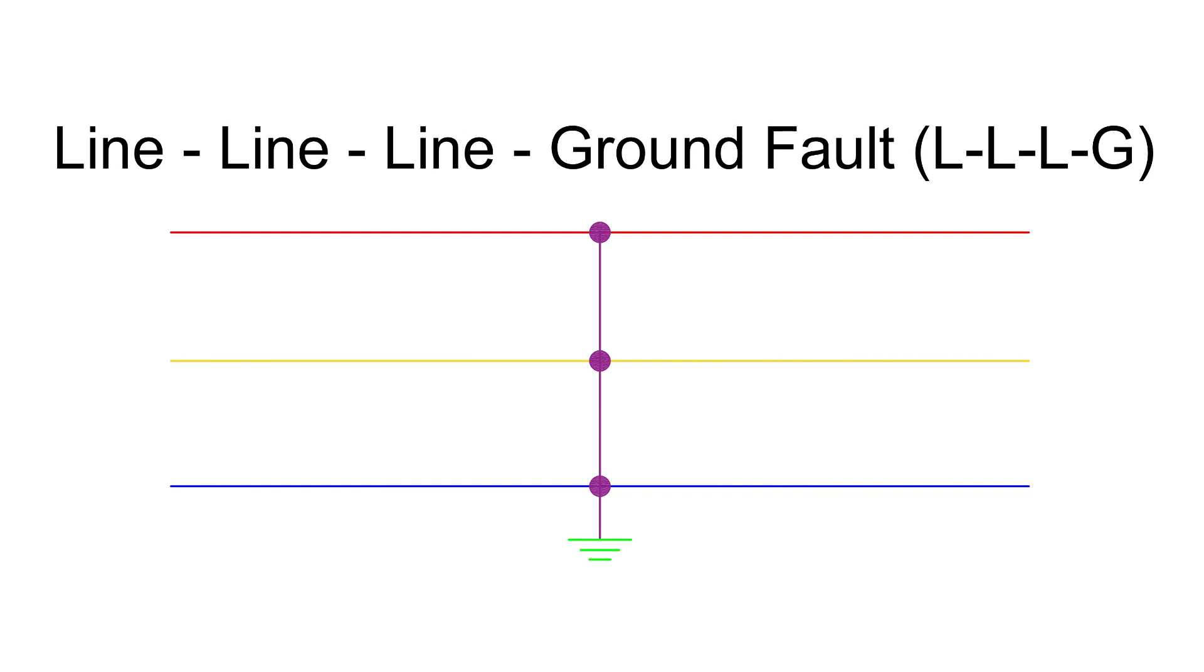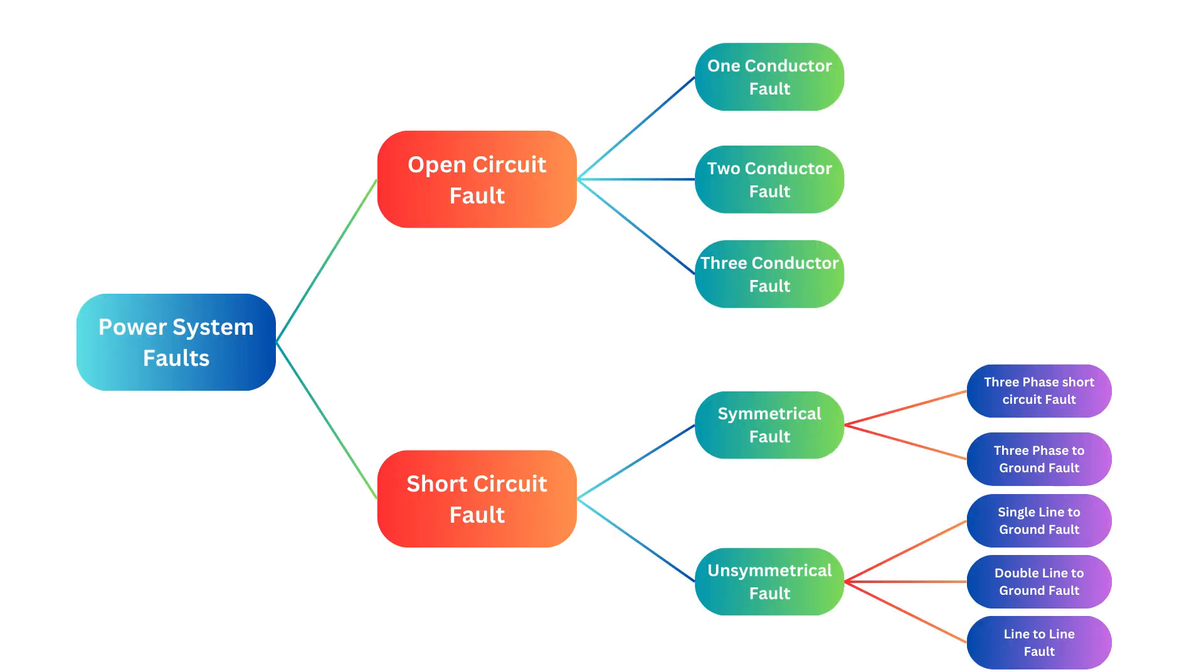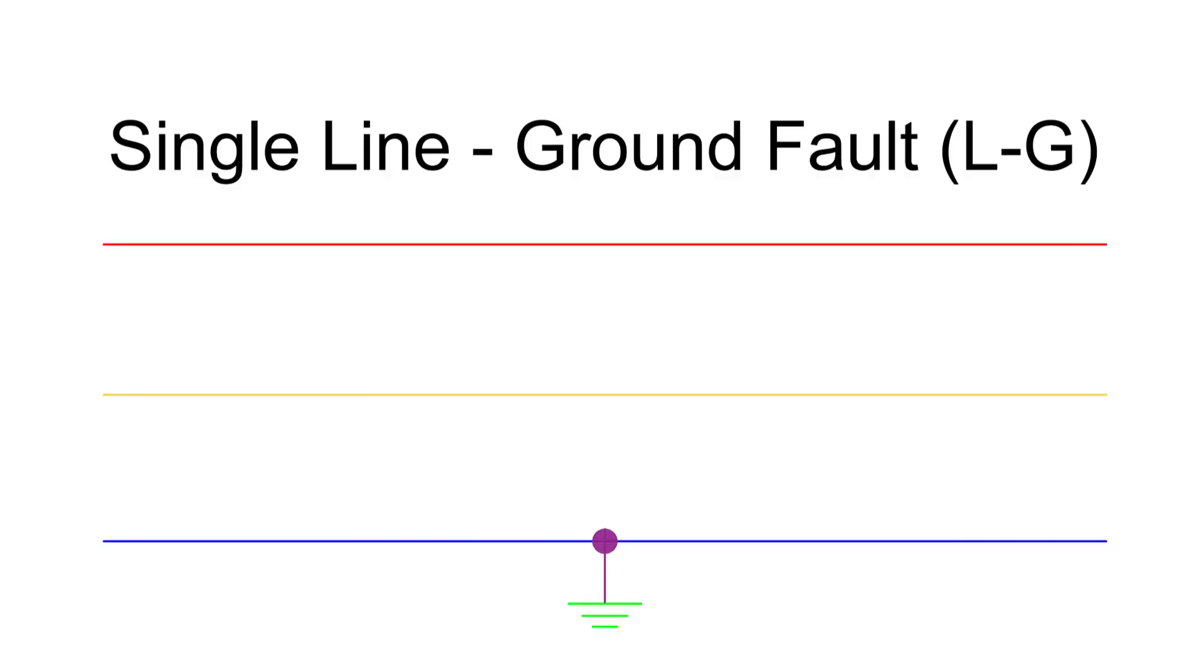Unlike symmetrical faults, unsymmetrical faults result in unbalanced current flow. These include single line-to-ground faults, the most common fault, occurring 70-80% of the time, happens when one conductor falls to the ground or contacts the neutral.